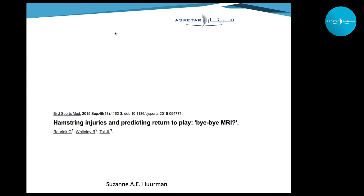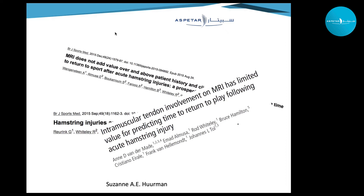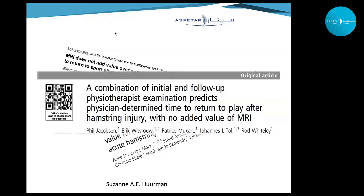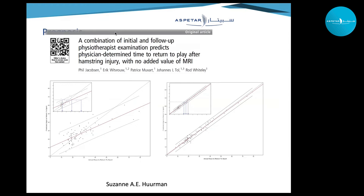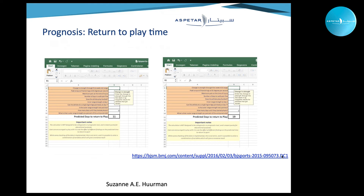A lot of research confirms that MRI is not the best tool for predicting return to play. Physical examination combined — one assessment immediately after injury and a second clinical examination seven days later — gives a much smaller 95% confidence interval and much better prediction. Adding MRI to this combination provides no additional value.